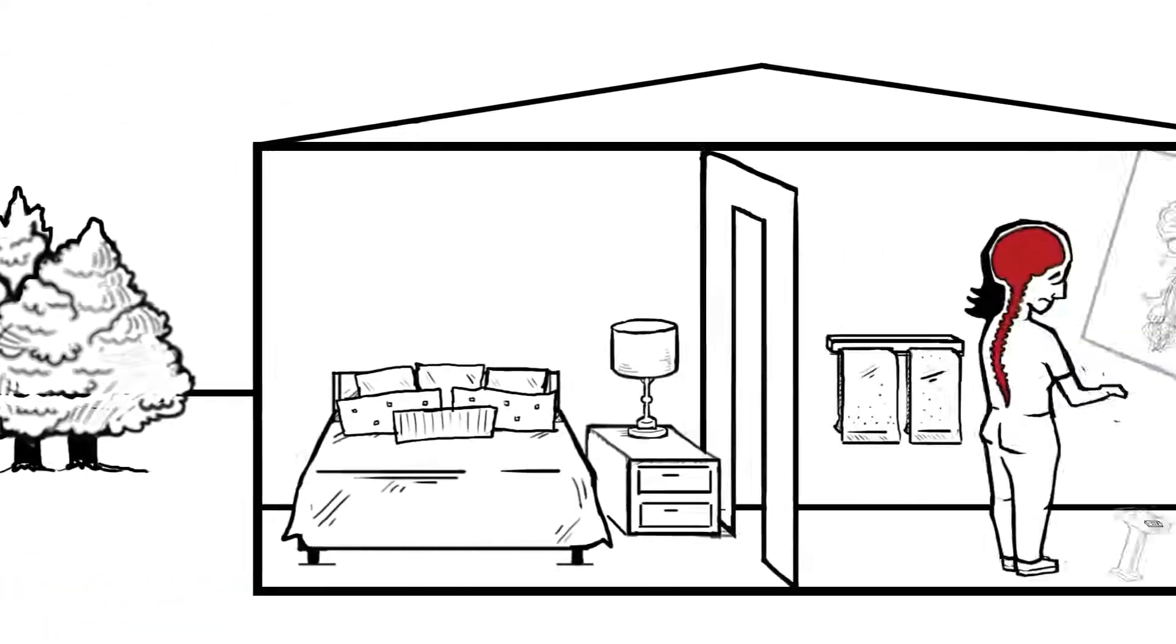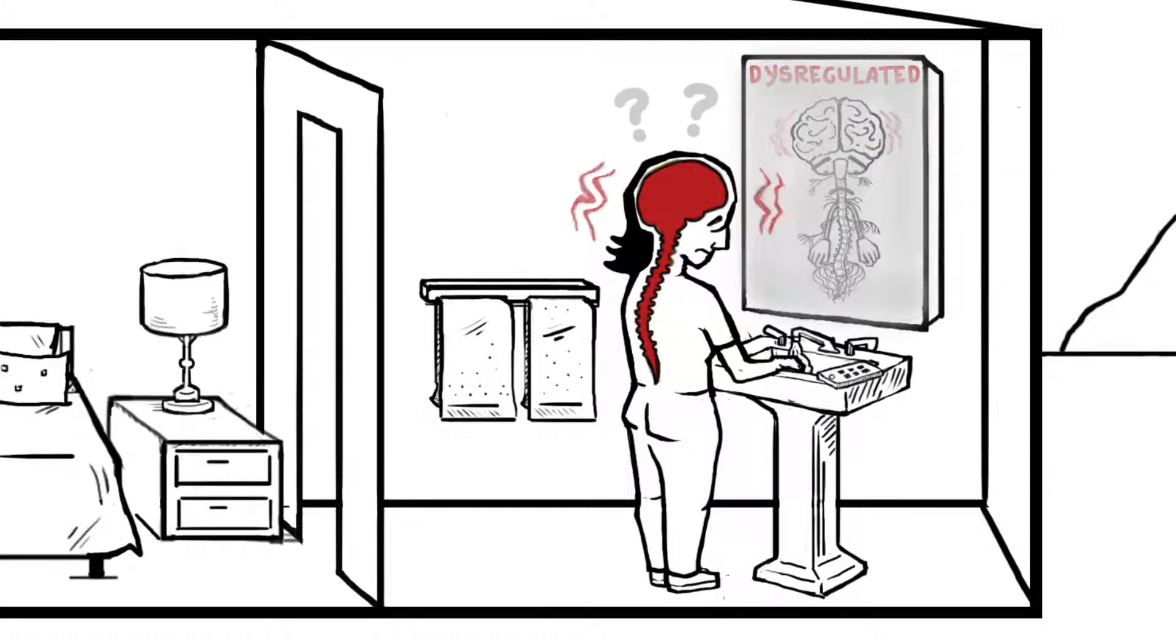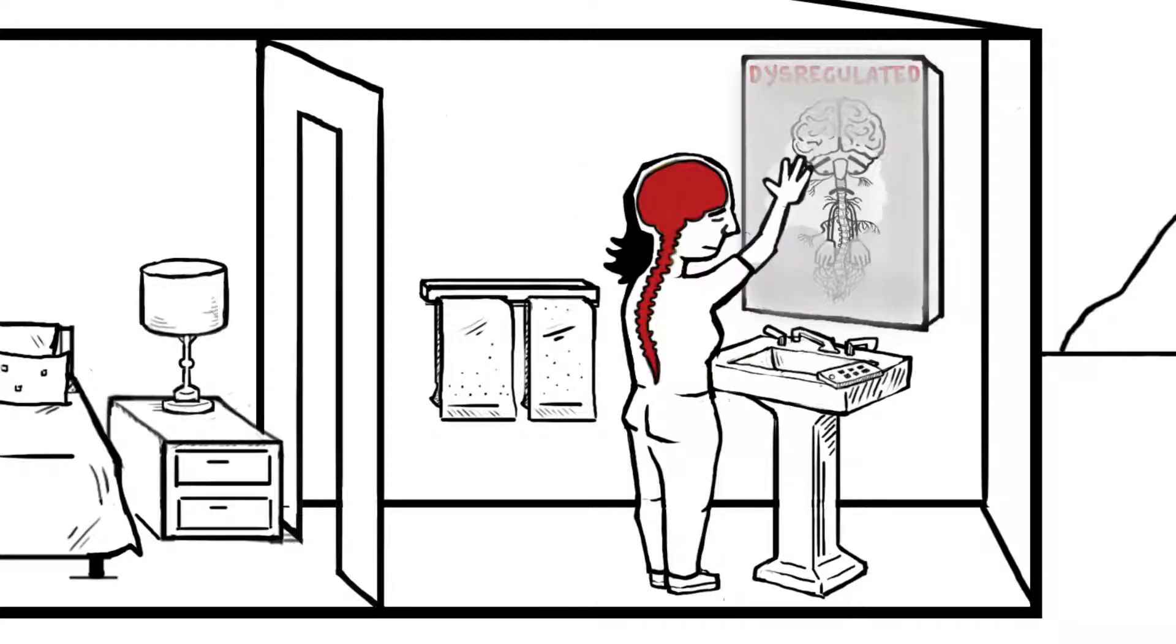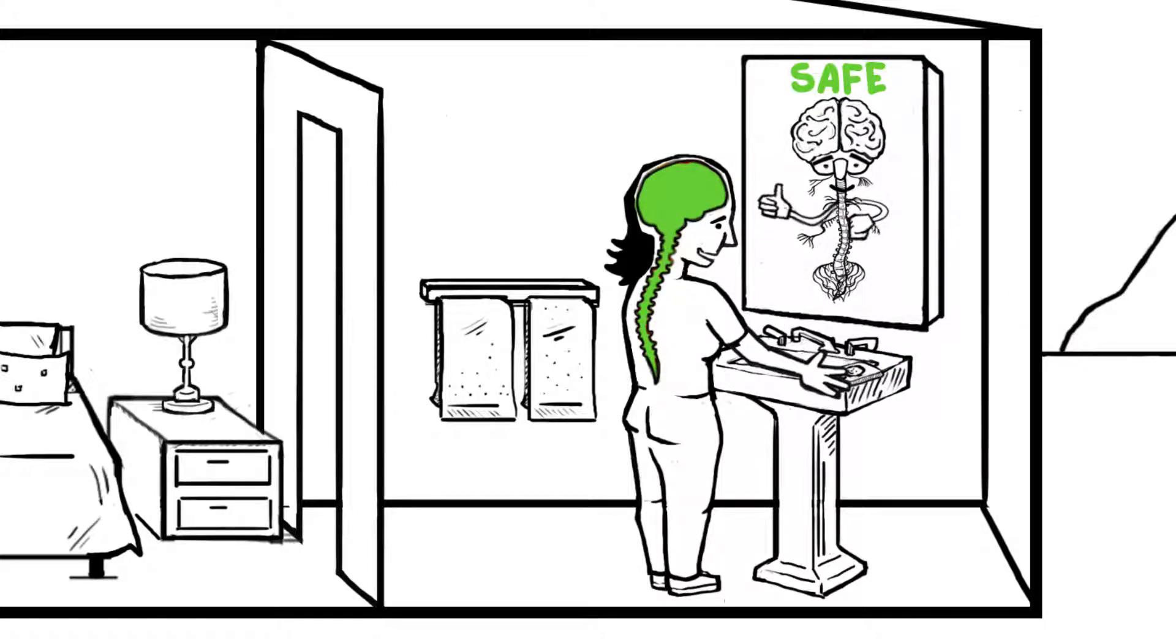So what can we do when ANS becomes dysregulated? How do we recover from trauma and develop a healthy, regulated, resilient nervous system? Fortunately, we can retrain ANS to feel safe again. This is best done with the help of others.